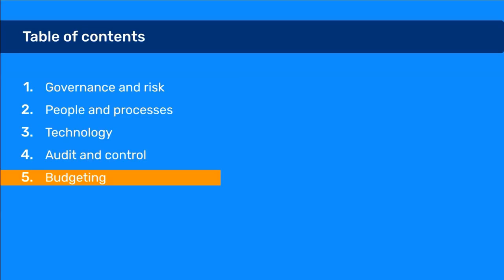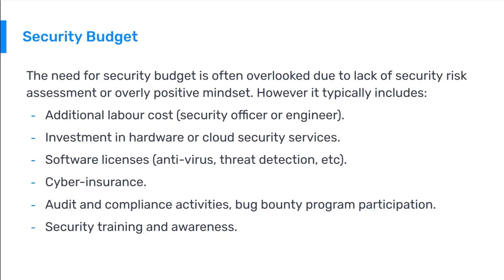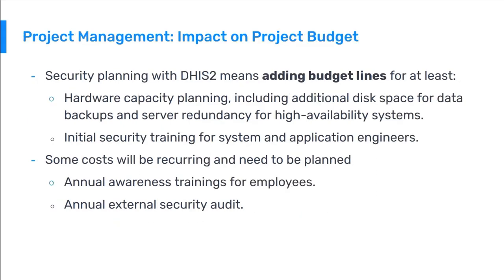The need for a security budget is often overlooked due to lack of security risk assessment or an overly positive mindset. A security budget typically includes additional labor costs for a security officer or engineer, investment in hardware or cloud security services, software licenses for antivirus or threat detection, cyber insurance, audit and compliance activities, bug bounty program participation, and security awareness and training. For DHIS2 specifically, budget lines should include hardware capacity planning with additional disk space for backups, server redundancy for high availability, and initial security training for system and application engineers.